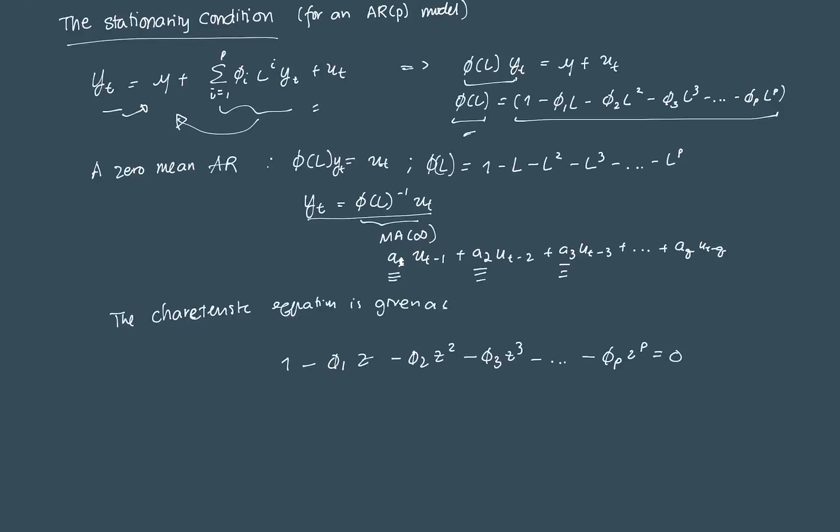By the stationarity condition, it must be that the roots all lie outside the unit circle. It's just a fancy way of saying that all roots, say z is some root, z must be greater than 1. That's the condition. In order for a series to be considered stationary, all of these roots must be greater than 1. And these roots determine the characteristics of the process that y_t would take. In particular, the AR process will depend on the roots of the characteristic equation.